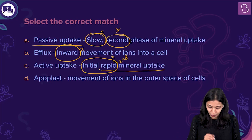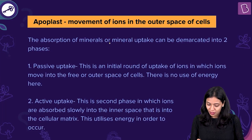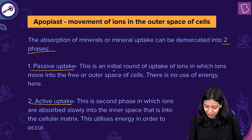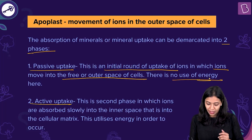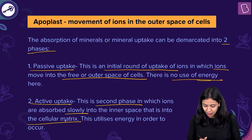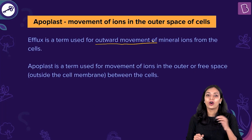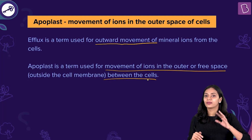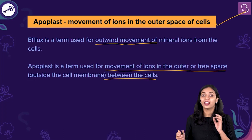The only correct option is option D: apoplast involves the movement of ions in the outer space of cells. To summarize: passive uptake is the initial first phase where ions move into the free outer spaces of cells without using energy; active uptake is the second phase where ions are absorbed slowly into the cellular matrix using energy; efflux is the outward movement of mineral ions from the cells; and apoplast refers to the movement of ions in the free or outer spaces of the cells, outside the cell membrane. The correct answer is option D.